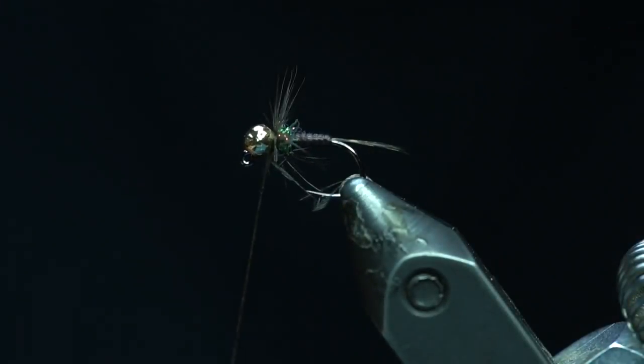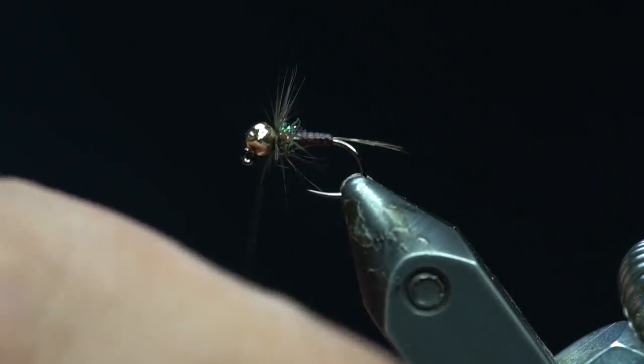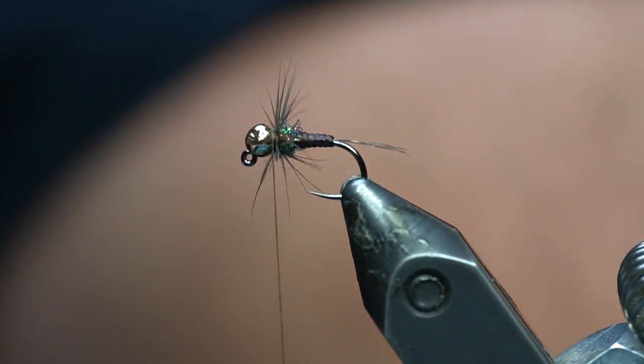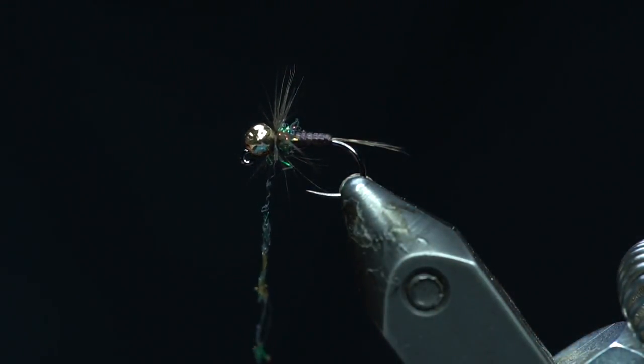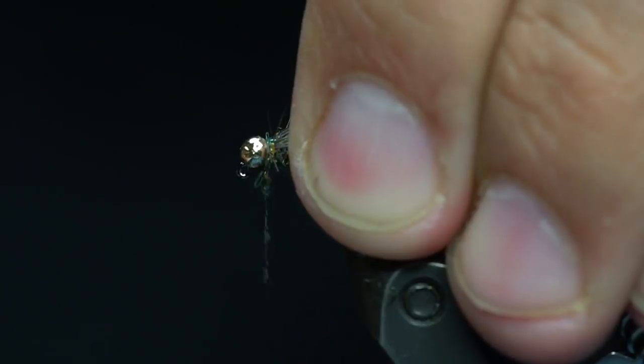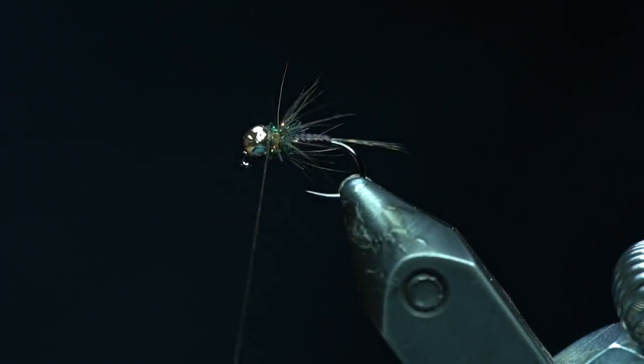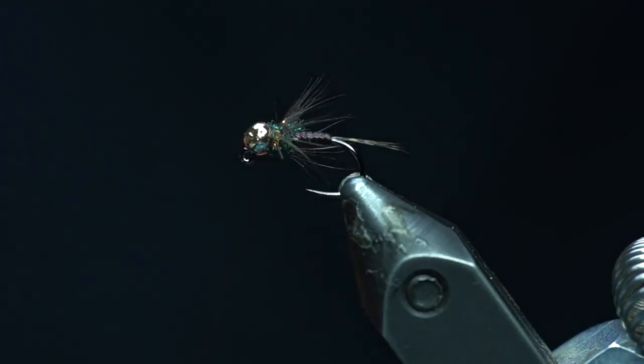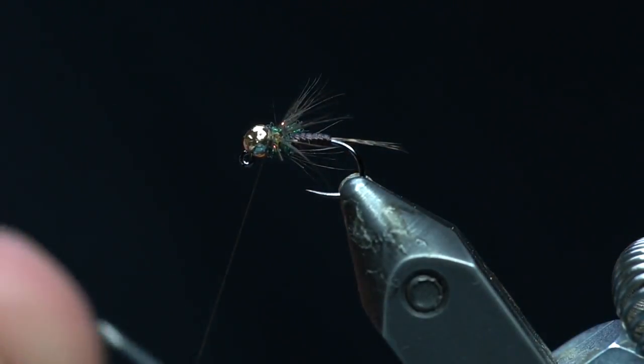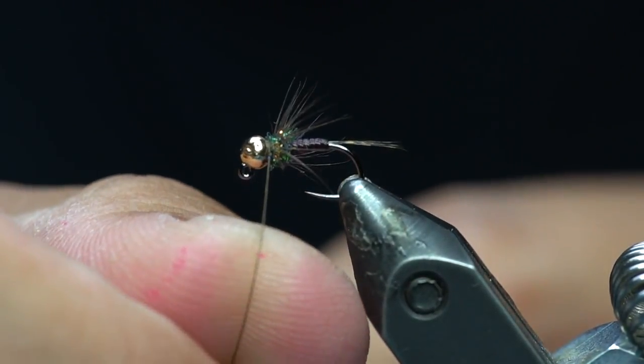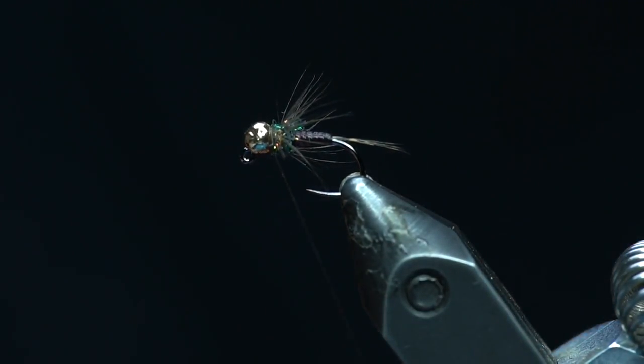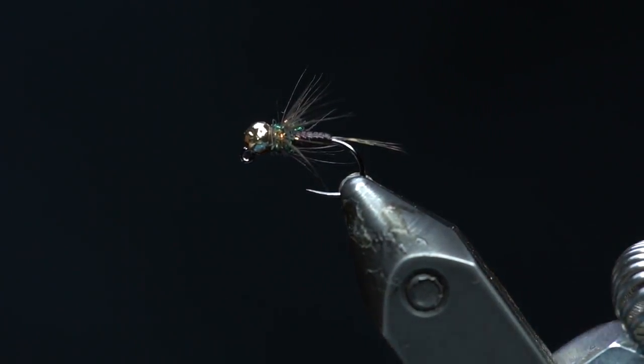Okay. Sweep all those fibers back. And then we'll just put a little bit of dubbing in front of that. Kind of clean the fly up. And just a little bit more peacock ice dub in front of those fibers there. And we'll go right into a whip finish. And that there is the Funky Flex. Thanks.